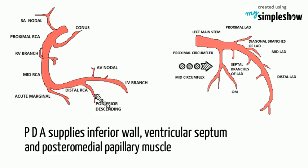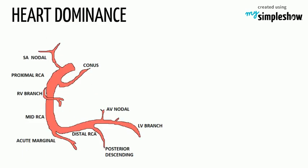The RCA supplies the SA nodal artery in 60% of people. The other 40% of the time, the SA nodal artery is supplied by the left circumflex artery. Next: what is heart dominance? Heart dominance is described by which coronary artery branch gives off the posterior descending artery.